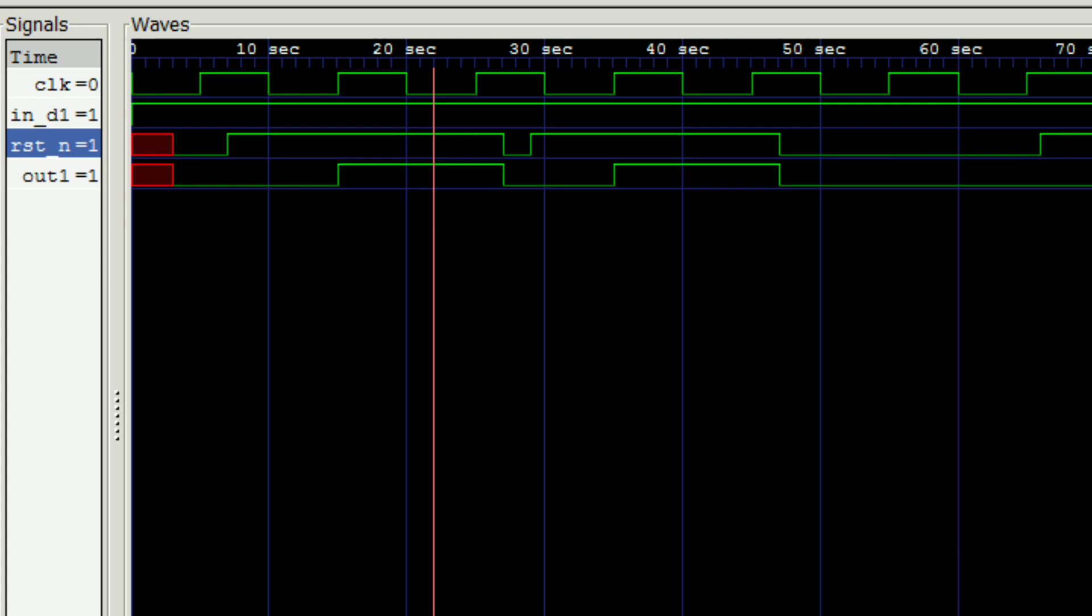So our issue was the second condition where we have applied the reset for a very short amount of time. As you can see, since it's an asynchronous reset, irrespective of the clock edge, we are getting the output zero till the next positive edge. So this is an advantage of asynchronous reset over the synchronous reset.